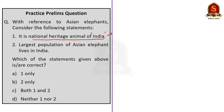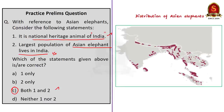Since both statements are correct, the correct answer is option C, both 1 and 2. This map shows the distribution of Asian elephant population in the world. Moving on to the second question — two statements are given and we have to find the incorrect statement. The first statement is that registered and recognized political party status are provided by the Election Commission of India — this statement is actually correct, as the ECI confers the status of registered and recognized parties to political parties in India.